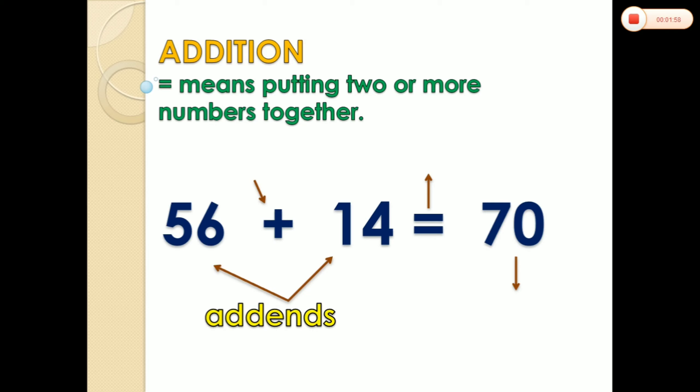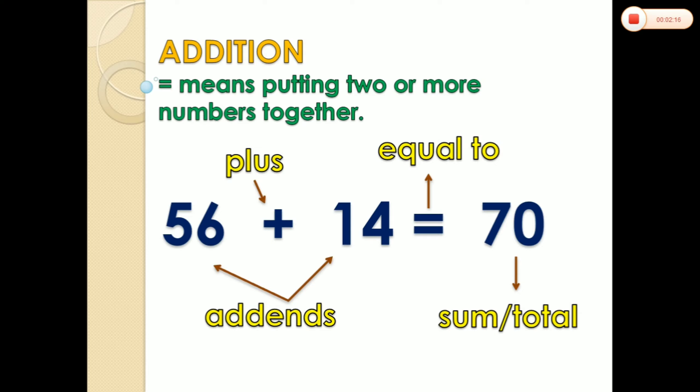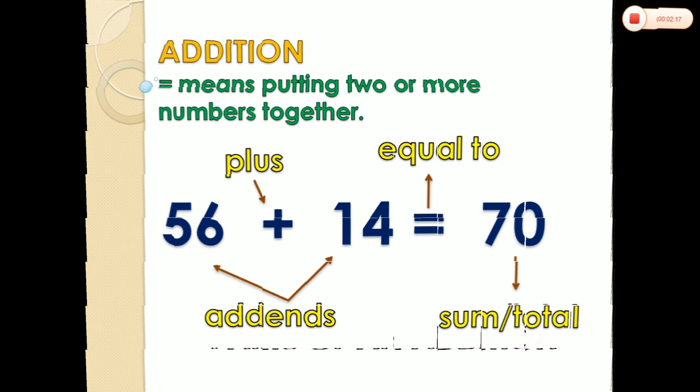Now, how about the symbol? This symbol is what we call plus. Another symbol is what we call equal to or equals. And the answer, we call this one as sum or total. Now, let's talk about the parts of an addition. Some books use addition sentence or addition equation — they're all the same.